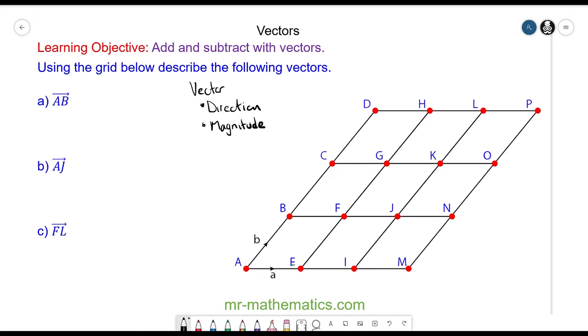The diagram is made up of equal parallelograms, so we can see that A to B has the same vector as E to F, which is the same as I to J and the same as J to K. But as we change the direction to the opposite direction and we go downwards, that becomes minus B. It's the same magnitude but the opposite direction.